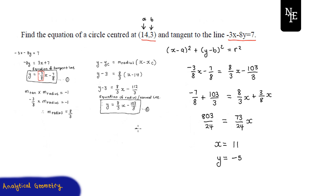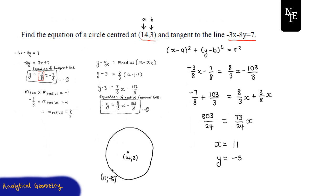Going back to our diagram, we now know that the center is at (14, 3) and the point of tangency is at (11, -5), where the tangent line y = -3/8 x - 7/8 touches the circle. So we've completed our first task, which is to find the point of tangency: (11, -5).